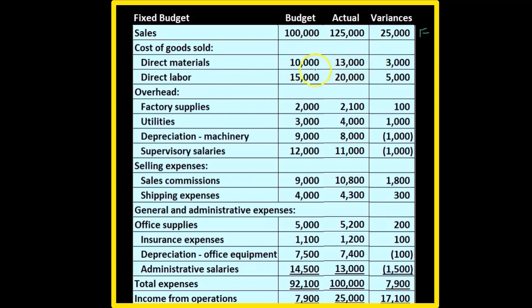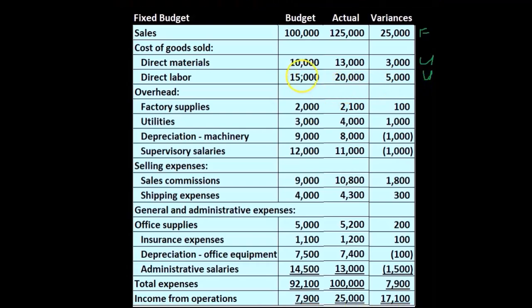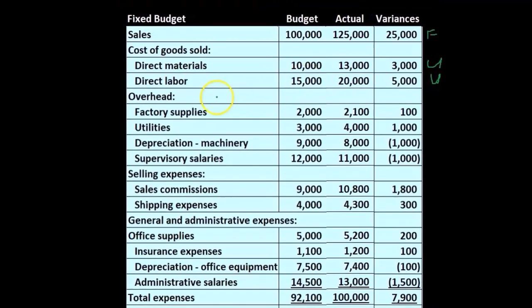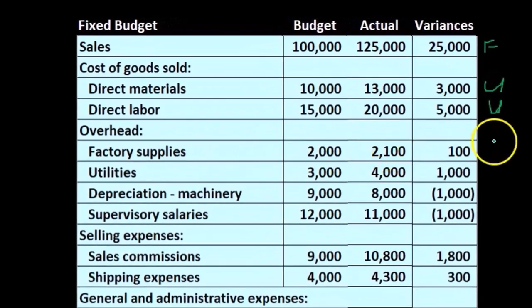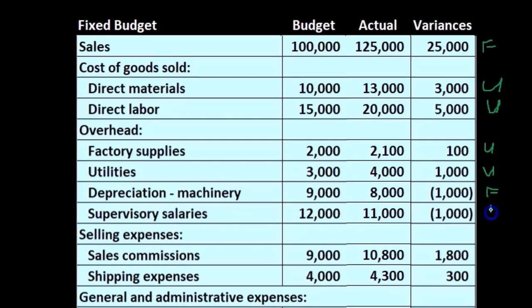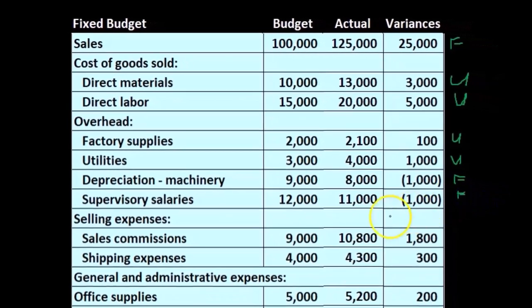Looking at expenses, the actual number is higher than the budgeted number, so we'd say that's unfavorable. Overhead — the actual is also higher, so that's unfavorable. Depreciation, however, was lower, so those are favorable.